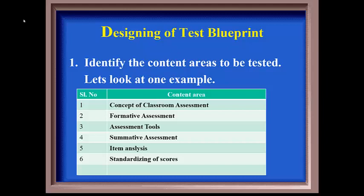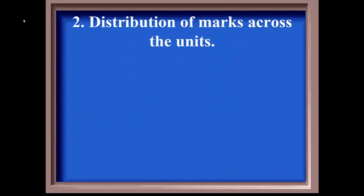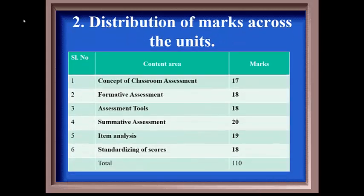The second step is distribution of marks across the units. Usually we distribute equal amount of marks across the units. Sometimes it depends on the weightage of the unit. The best one is equal distribution of marks across the units if all units are of equal length and are equally important.